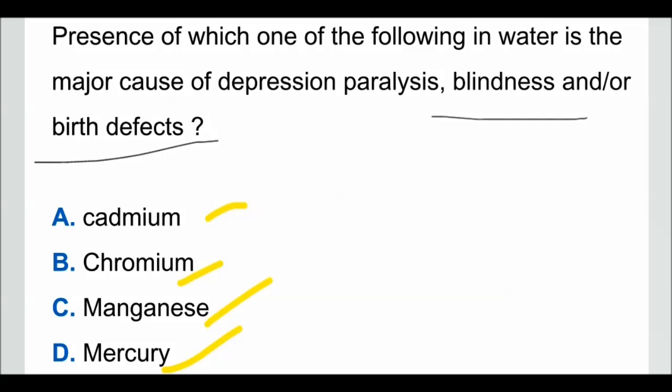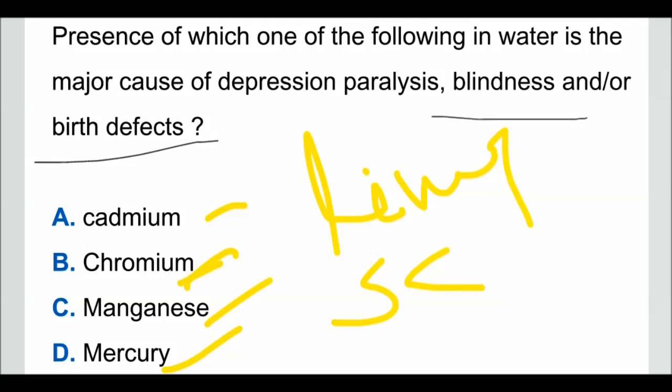Option A, cadmium: when cadmium is present in water, it causes liver injuries — not depression, paralysis, blindness, or birth defects. So option A is wrong. Option B, chromium: when chromium is present in water, it causes stomach cancer, which is not related to depression, paralysis, blindness, or birth defects. So option B is also wrong.